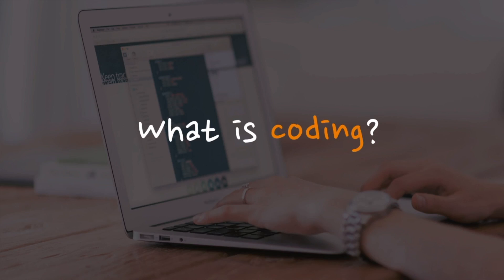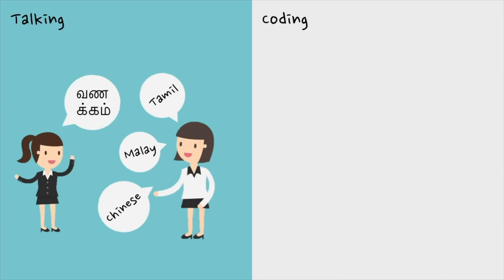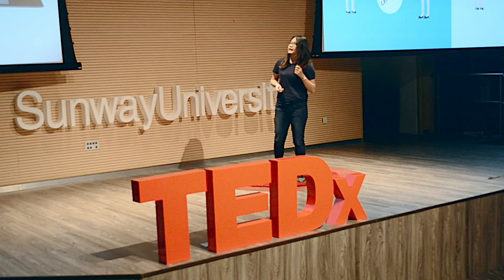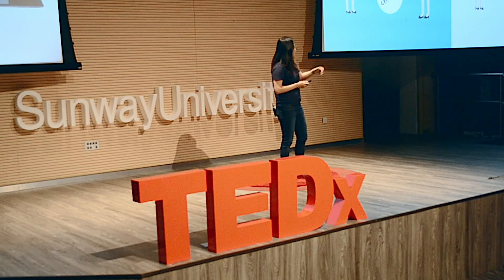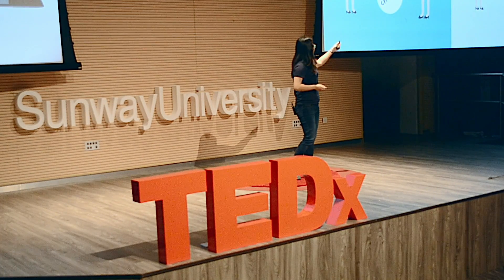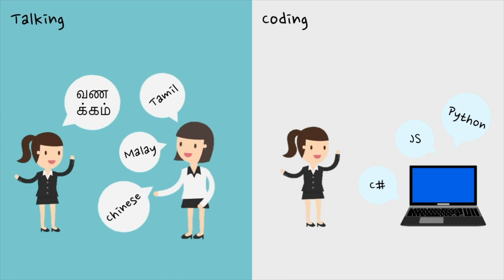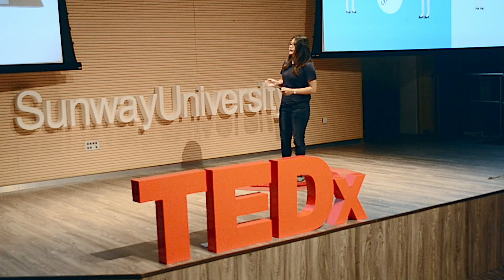But what exactly is coding? The most common explanation is that coding is like talking — it's just that we humans talk to a computer. The computer can understand different languages, like C#, JavaScript, Python, and many more programming languages.